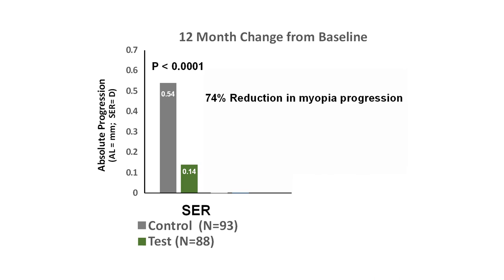These results are for spherical equivalent refractive error. The myopia of subjects in the control group progressed on average 0.54 diopters in the first year of the study. However, the subjects wearing the treatment spectacles progressed on average only 0.14 diopters. Thus, the treatment spectacles produced a 74% reduction in myopia progression.